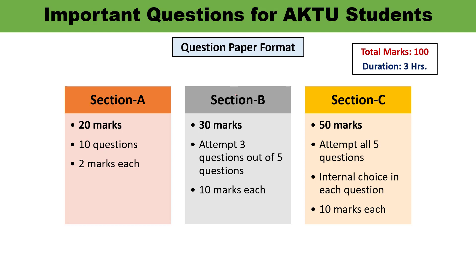In Section B, which is of 30 marks, out of 5 questions you need to attempt 3 questions, and each question carries 10 marks, making 30 marks total. Section C is of 50 marks — you will get 5 questions and you need to attempt all of them, but each question will have an internal choice. So that is how the total 100-mark question paper is structured.